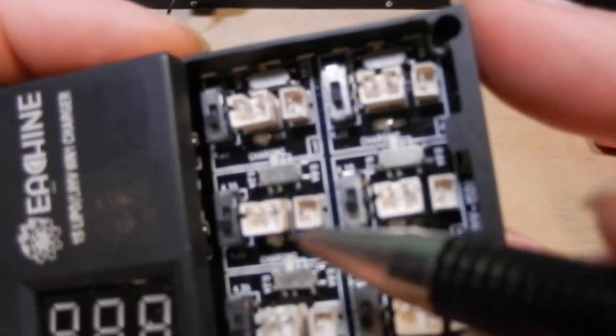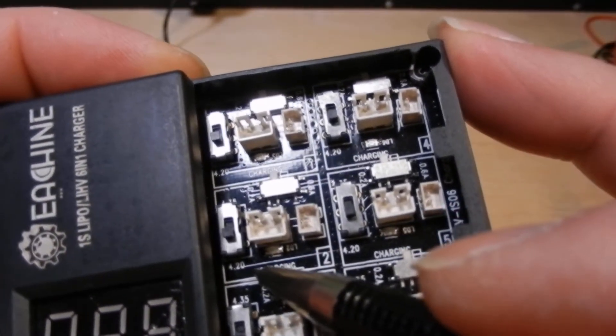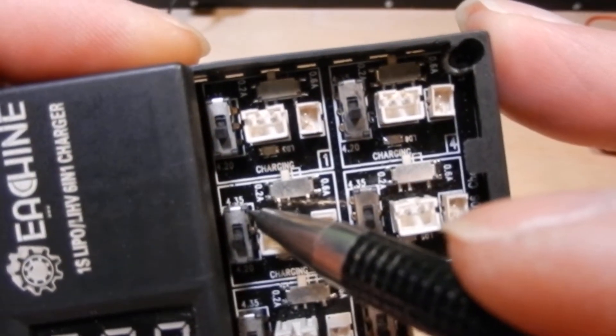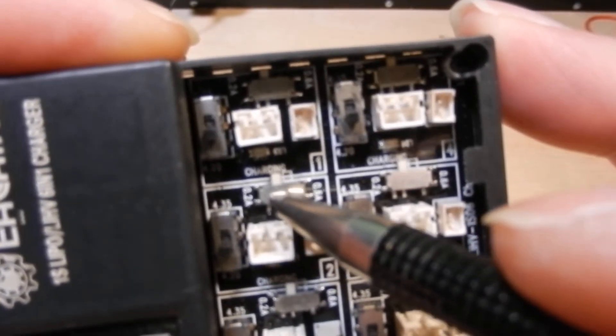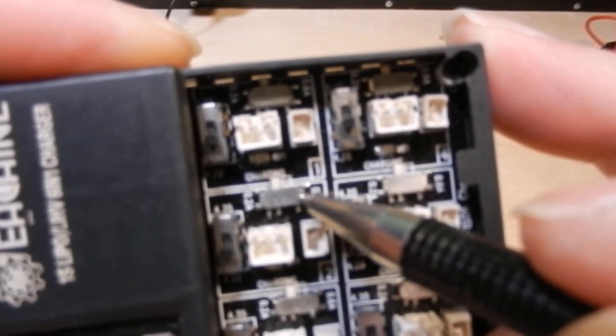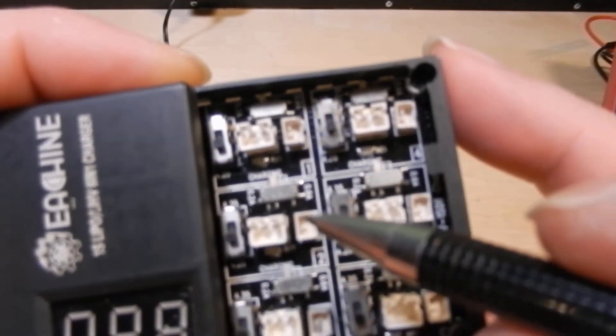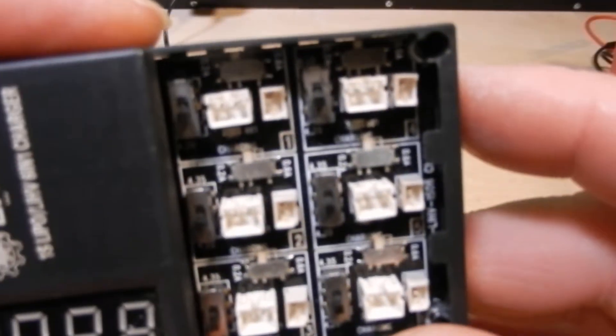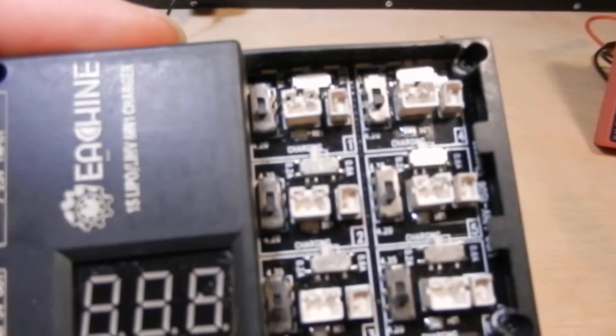Now on each channel you also have a selection switch here. The lower position is for your LiPos at 4.2 volt. In the upper position you have 4.35 volt for your LIHVs. And up here you have on each channel a selection switch for your charge rate: 200 milliamp and 600 milliamp. I don't think you guys are going to see this because these are really small letters and my camera doesn't want to focus. But these things work out really nice.